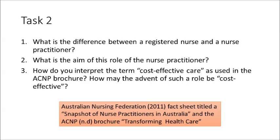Another good example of skill escalation can be found in nursing, where more recently the nurse practitioner role has been established in Australia. This is the focus of Task 2. Read the Australian Nursing Federation fact sheet called Snapshot of Nurse Practitioners in Australia, and also the ACNP brochure Transforming Healthcare, and think about these three questions: What is the difference between a registered nurse and a nurse practitioner? What is the aim of the nurse practitioner role? And how do you interpret the term cost-effective care as used in the ACNP brochure, and how may the advent of such a role be cost-effective?